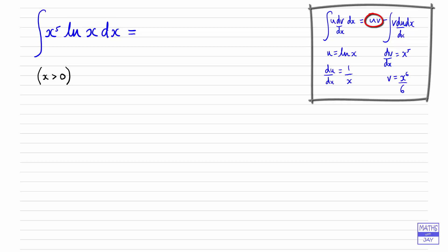We're going to multiply u and v together, so that's log x times x to the power of 6 over 6. So it's easier to write the x term first of all so it is obvious that we're only finding the natural log of x.